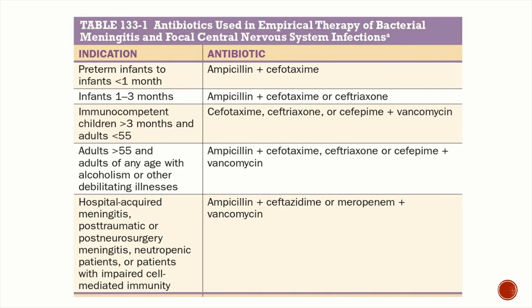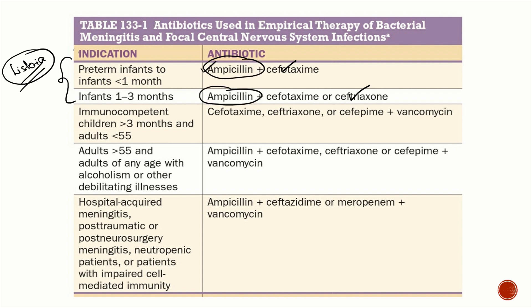You do not need to wait for CSF results before starting empirical antibiotics. For infants less than three months of age, give cefotaxime or ceftriaxone plus ampicillin, because this age group is at high risk of Listeria infection.